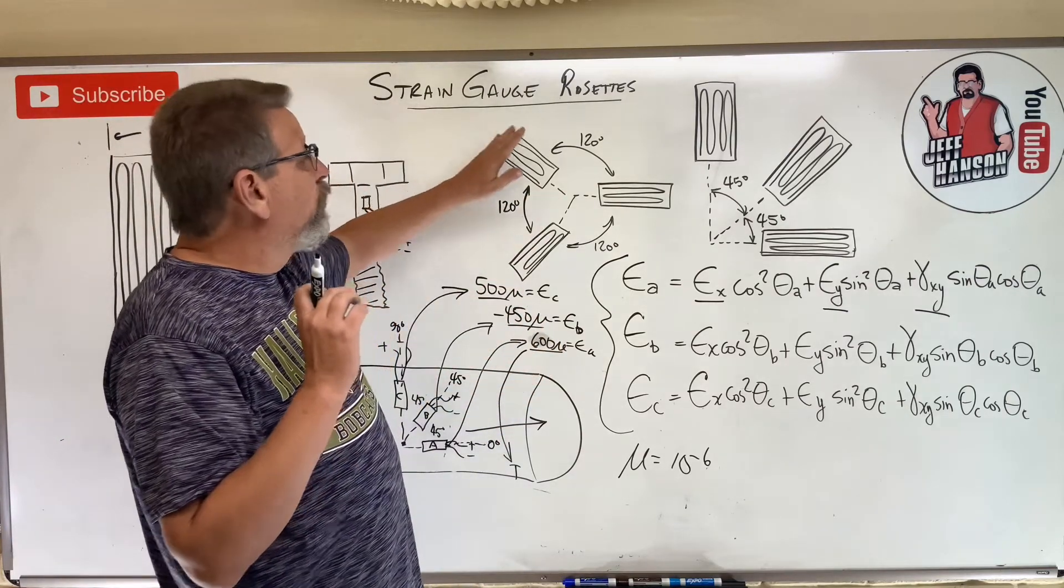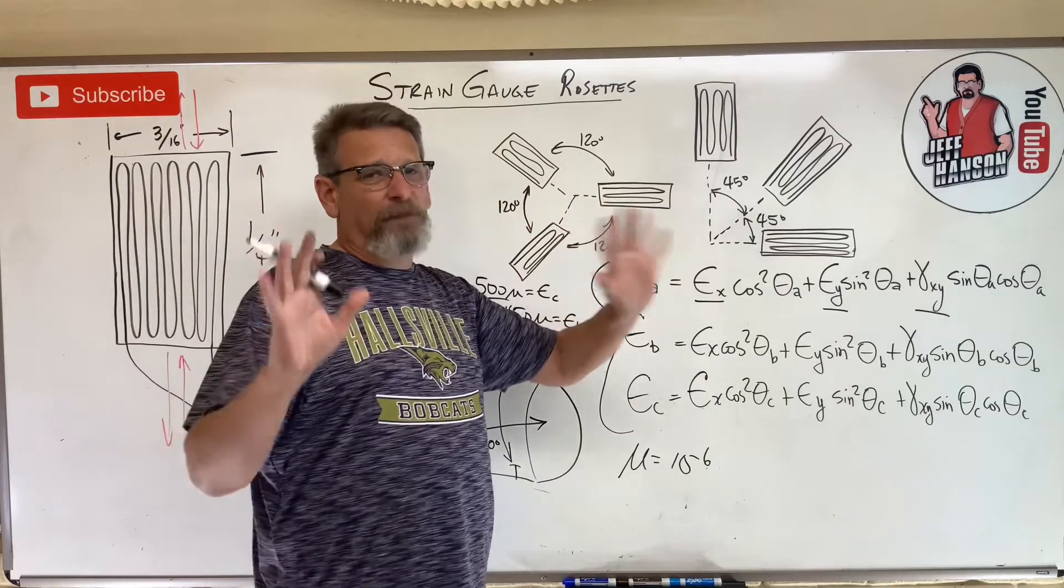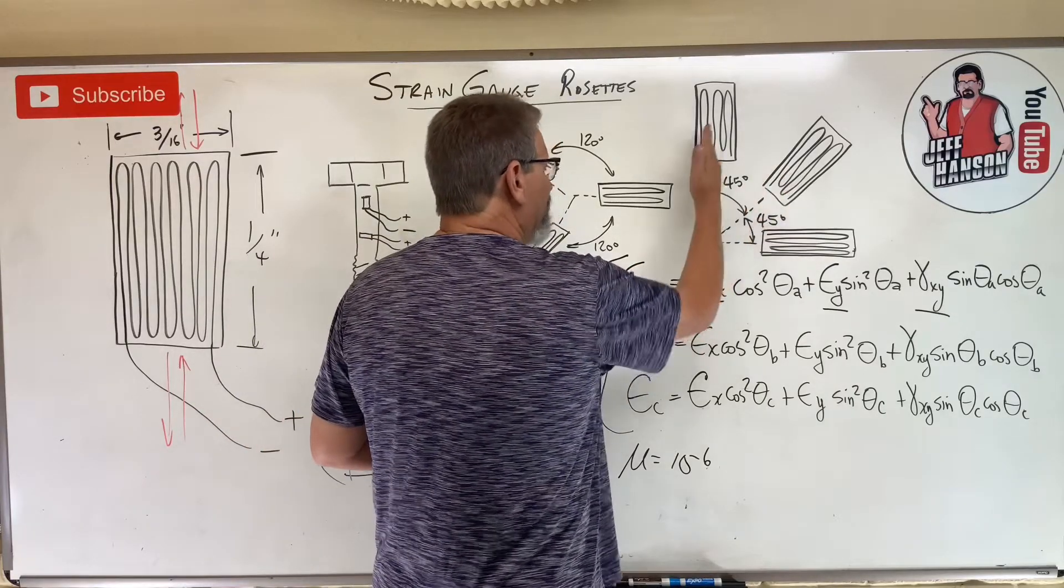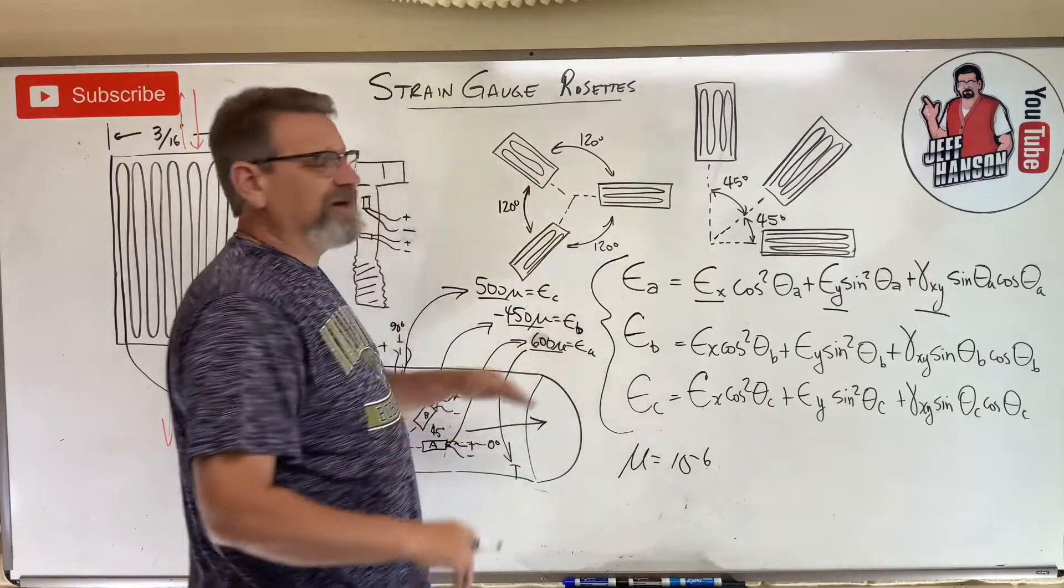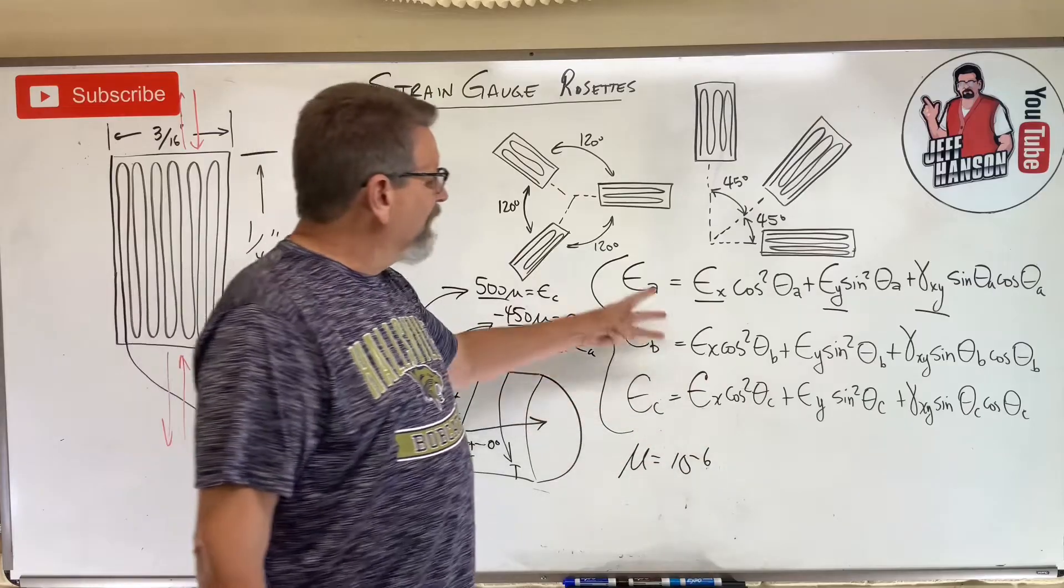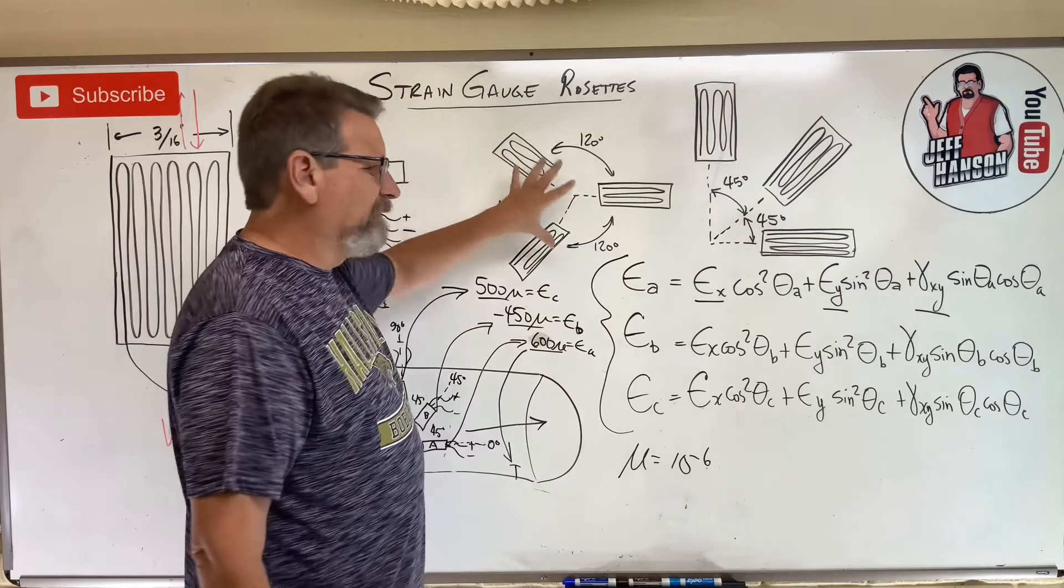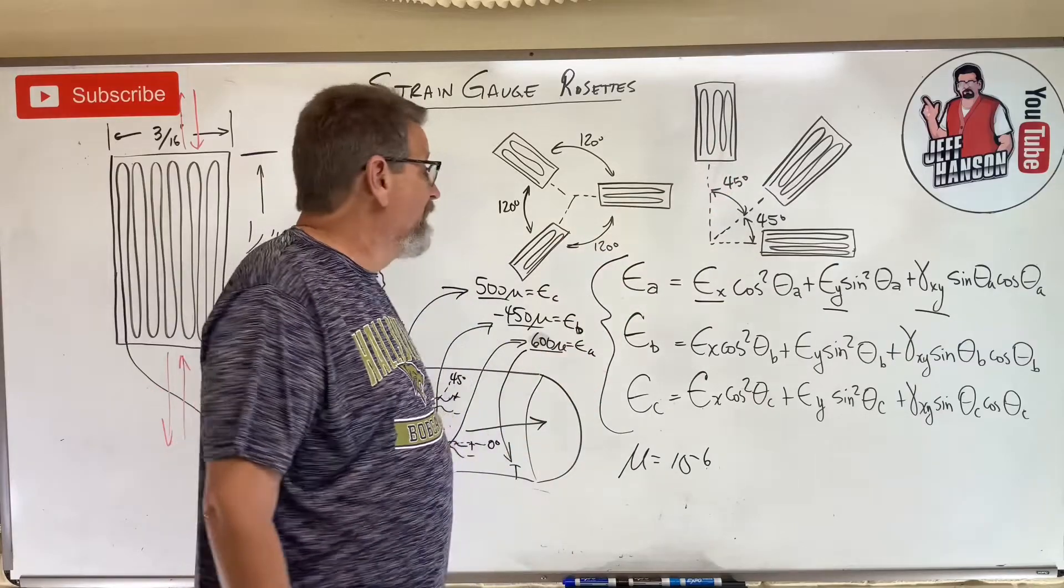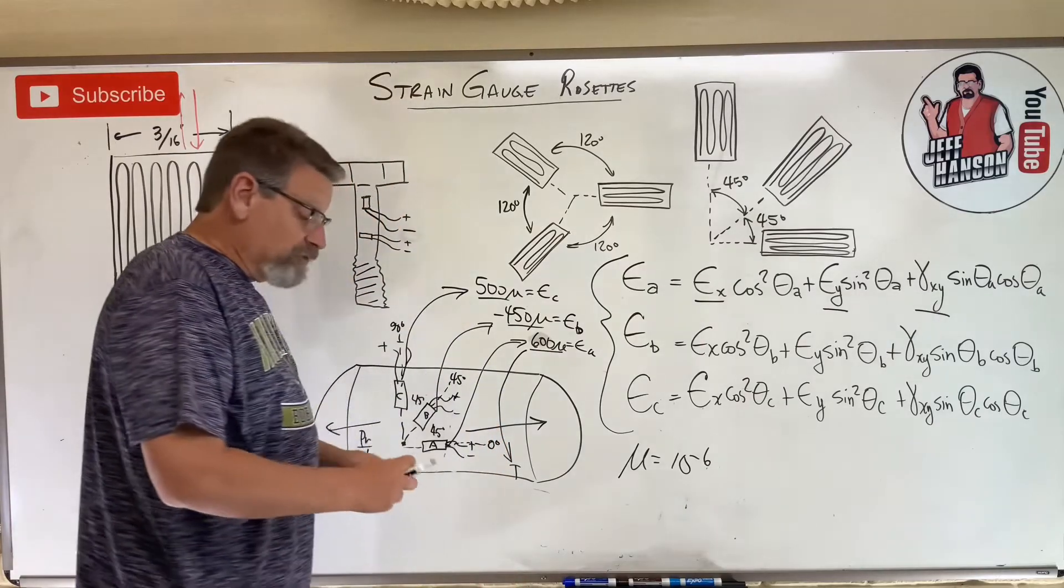So those are your strain rosette equations. Here are probably the two most commonly used strain rosettes: this one here that's at zero, 45, and 90, just like I drew down here, in that arrangement. Or you'll see them in this arrangement here where they're spaced 120 degrees apart. But I need three gauges to have three equations to solve for strain in any direction I want. Now these gauges don't have to be arranged in these particular rosettes - they can really be, you can choose what you want - but these are some of the more common rosettes that you'll see.